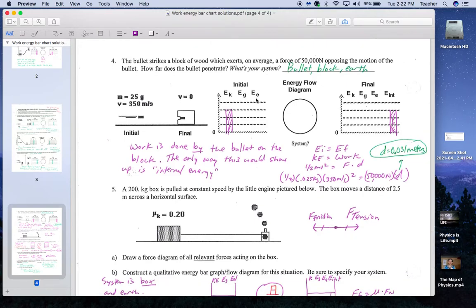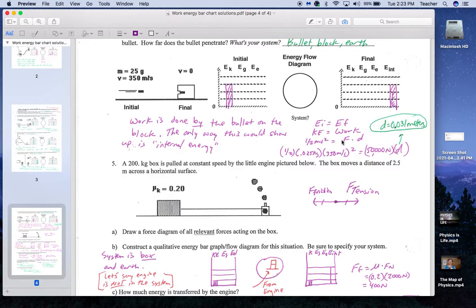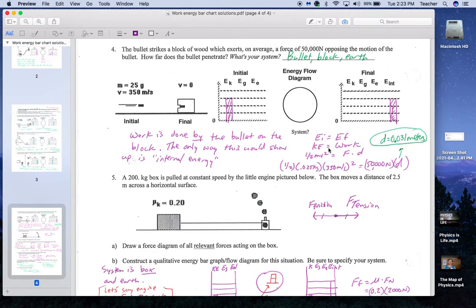This one's a little harder for number four. The bullet strikes a block of wood which exerts on average a force of 50,000 newtons. The bullet's moving here, so it's a lot of kinetic energy. It's not moving at the end. So essentially, the initial energy is kinetic energy. The final energy is the work done, the force times distance done on the block. So I get 1/2 m, got to convert this to kilograms, that's 0.025 kilograms, velocity squared equals 50,000 newtons times distance. That comes out to about 3 centimeters, which is 0.03 meters.